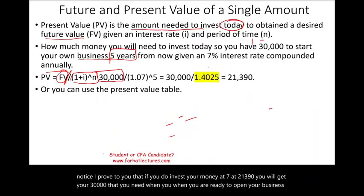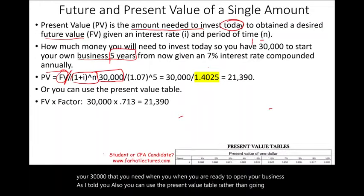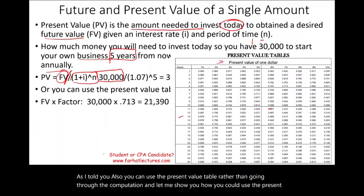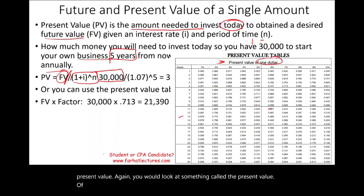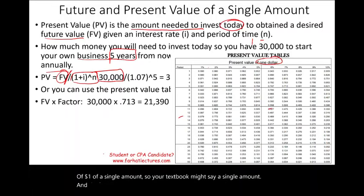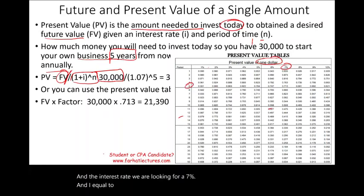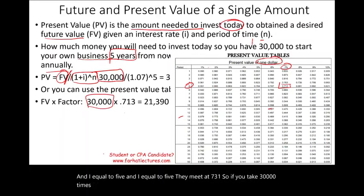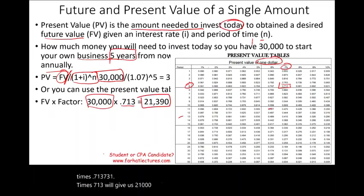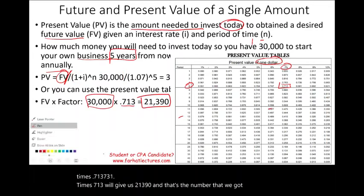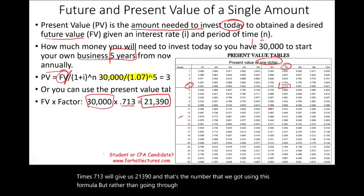You can also use the present value table rather than the formula. Look up the present value of $1 for a single amount at i = 7% and n = 5. They meet at 0.713. So $30,000 × 0.713 = $21,390 — the same number we got using the formula, but without needing to do the computation manually.